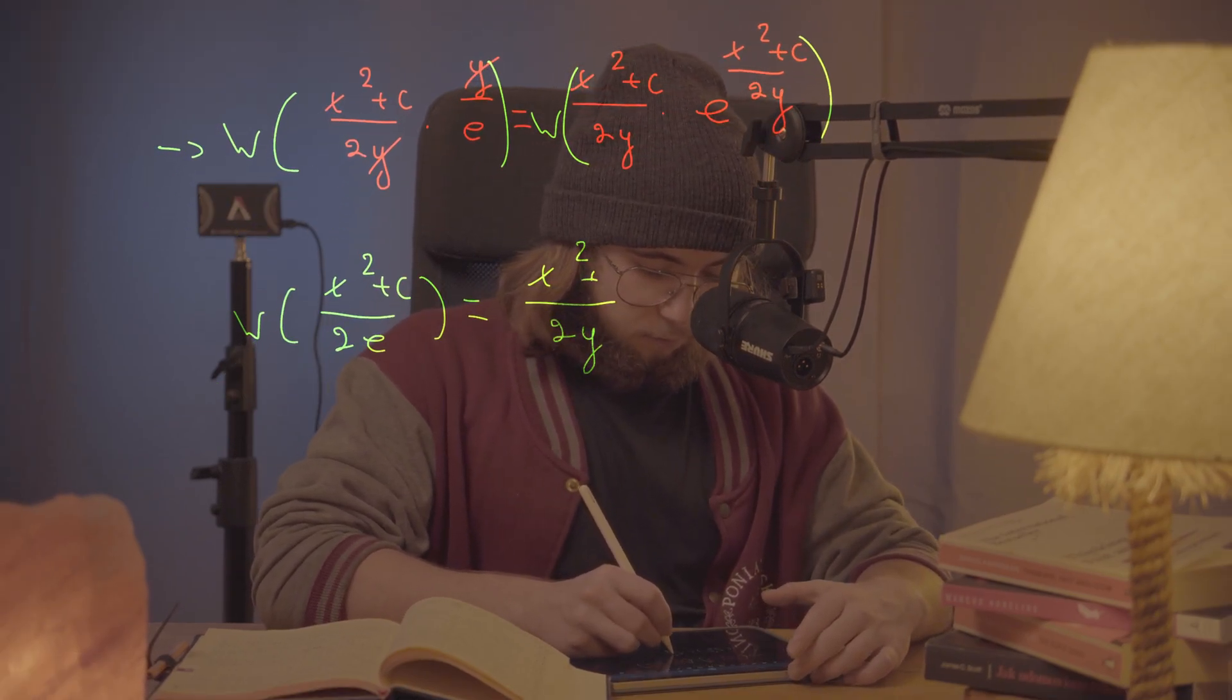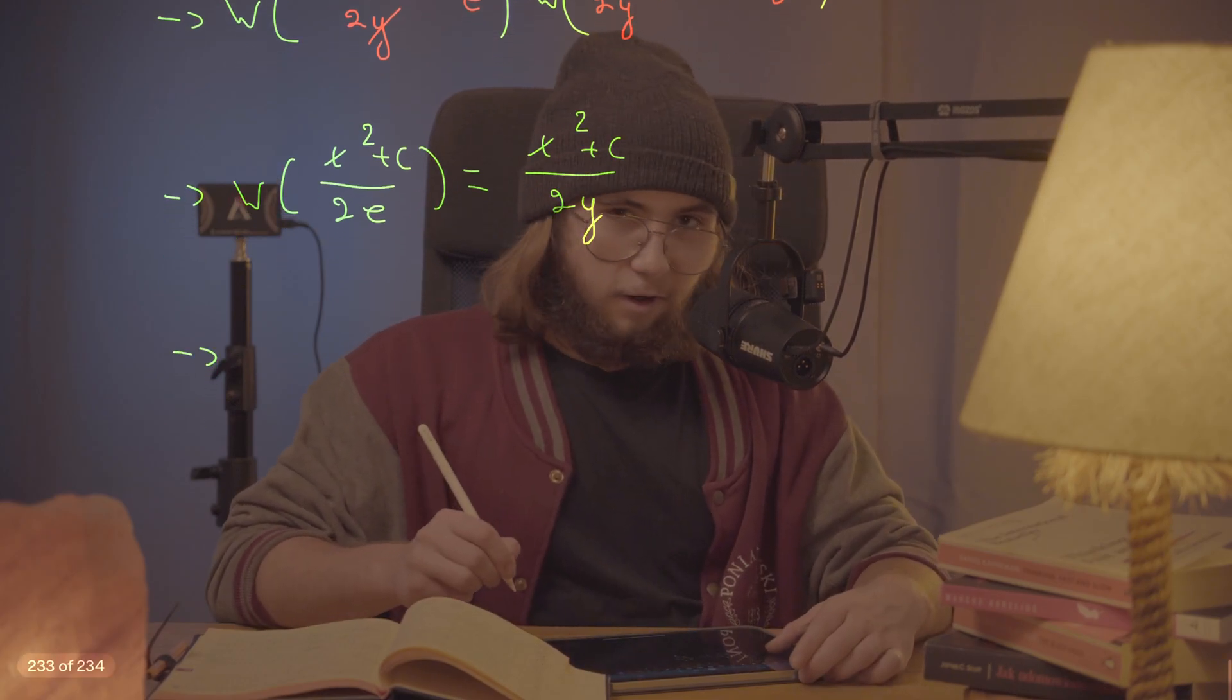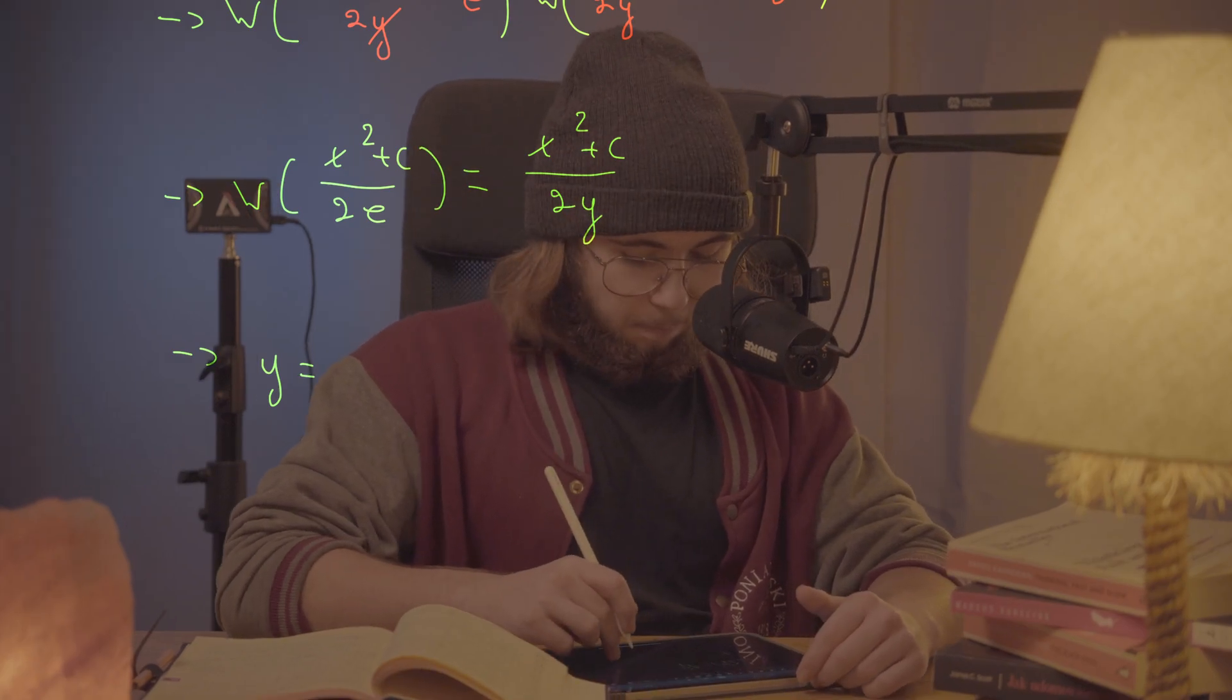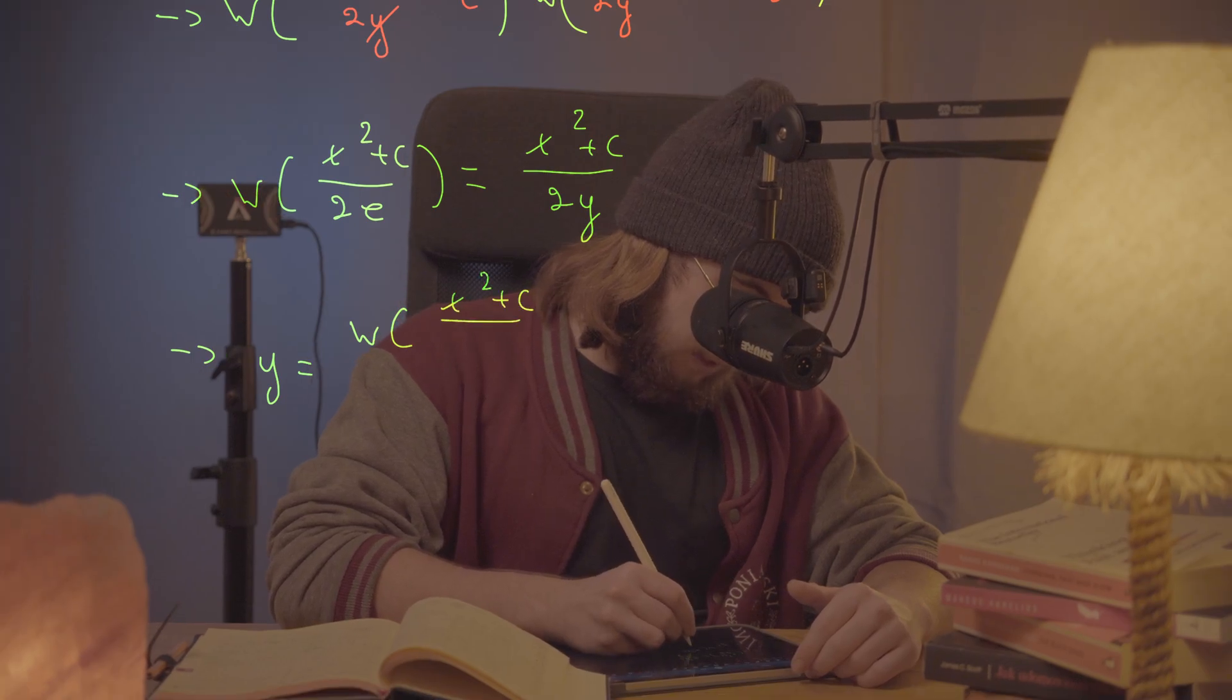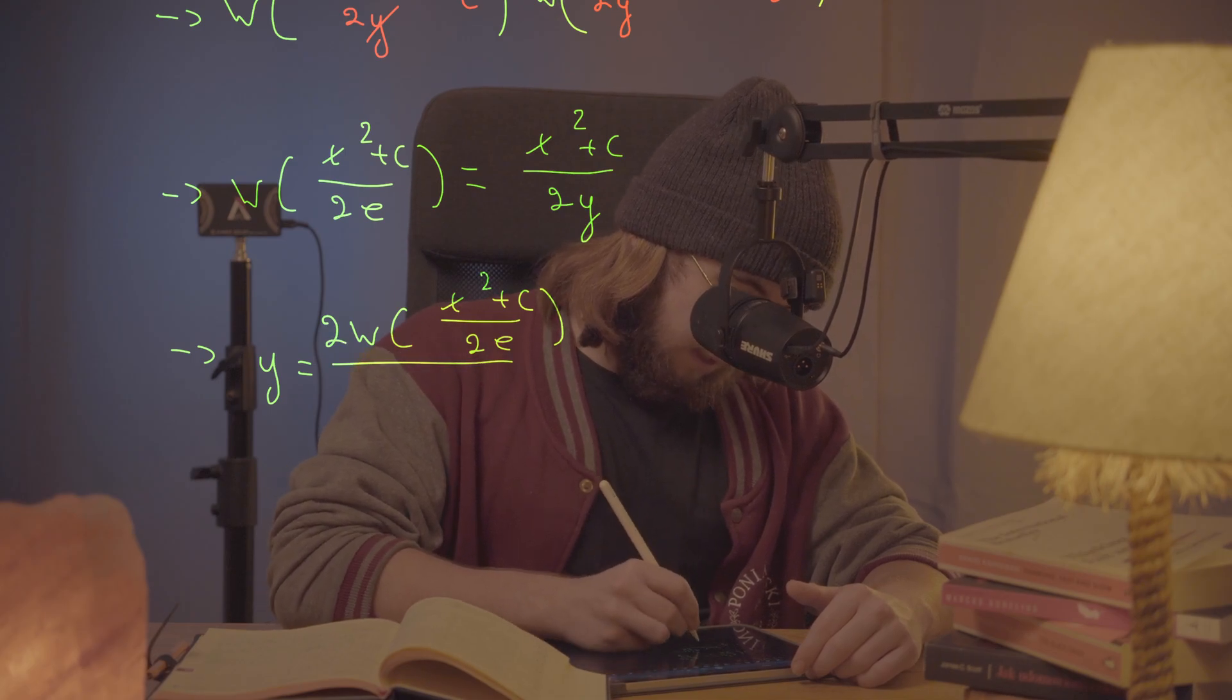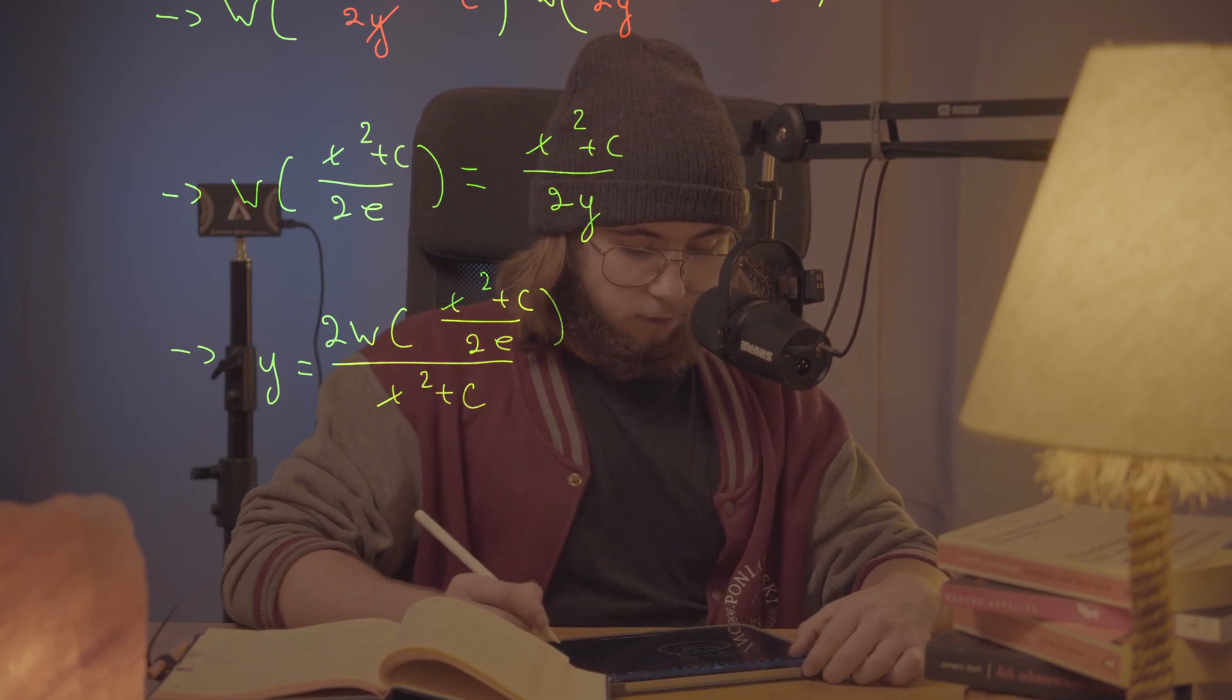And so what I get from that is pretty easy way for getting the closed formula for y, which is just W((x squared plus c)/(2e)) times 2 all divided by (x squared plus c). And this is my closed form for the y.